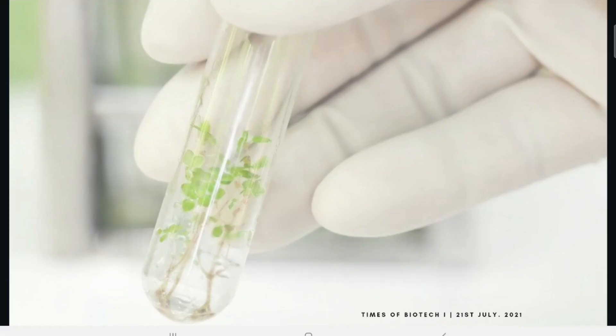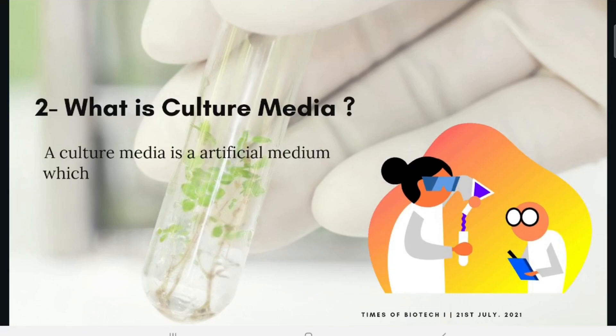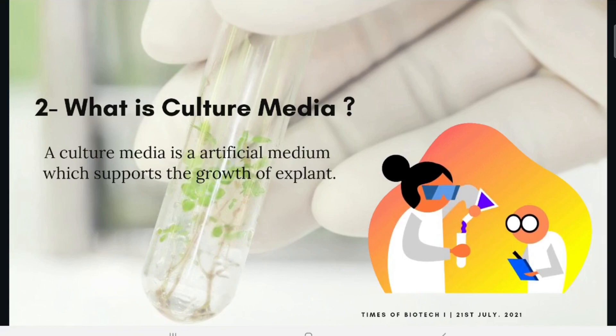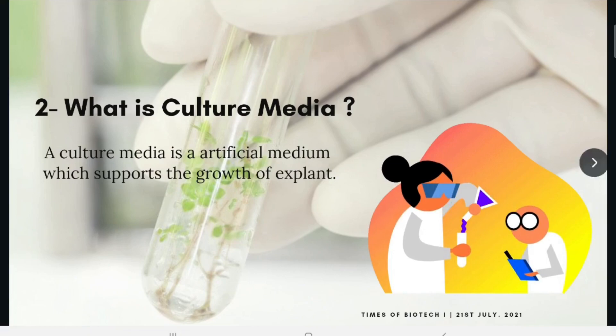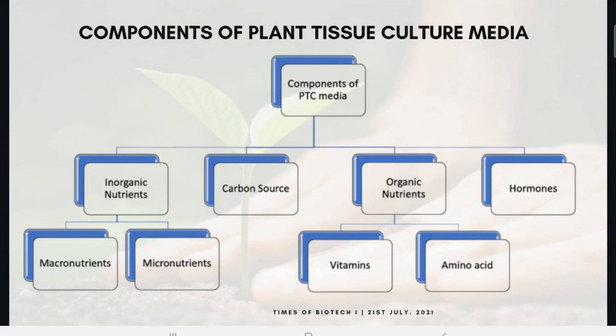So what is the culture media? As we know, plants have an organized channel through which they prepare their own food for growth. But since we are attempting to generate a whole plant from a small chunk, we have to supplement it with different growth regulators in the form of artificial culture media. We have divided the components of plant tissue culture media into four parts: inorganic nutrients, carbon source, organic nutrients, and hormones.